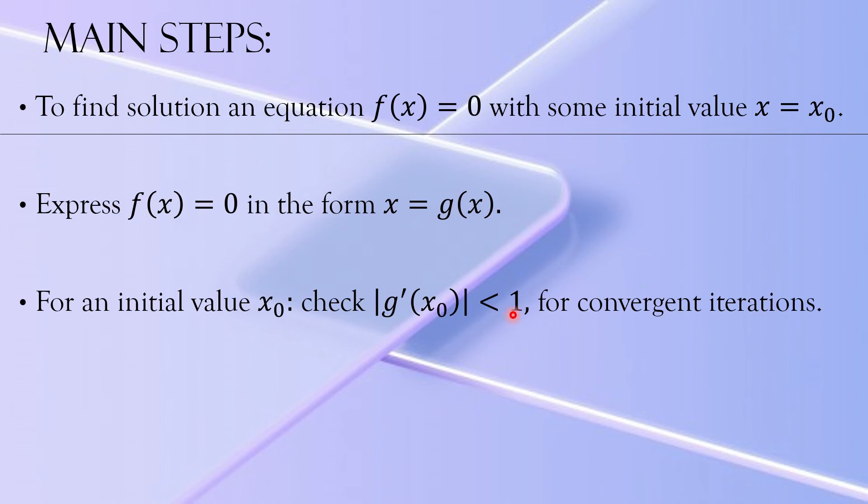If the condition is satisfied, |g'(x₀)| if that is less than 1, the iterations we are setting will be convergent. If this is greater than or equal to 1, the iterations will be divergent.